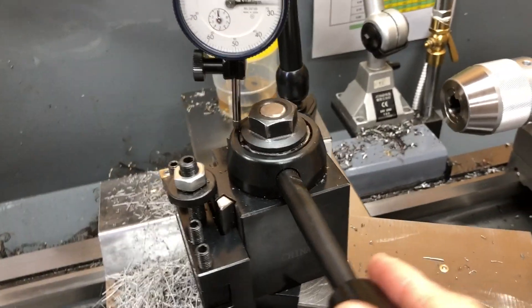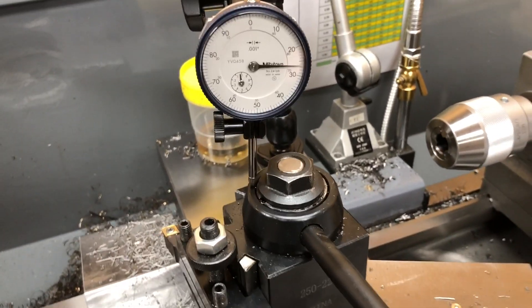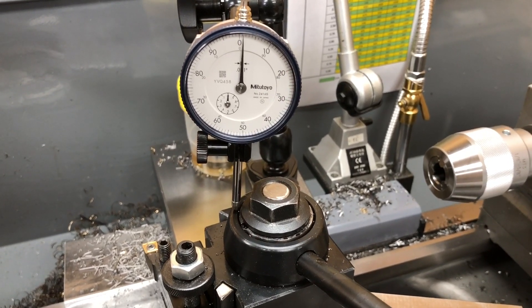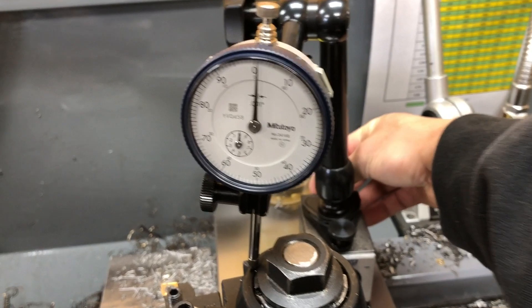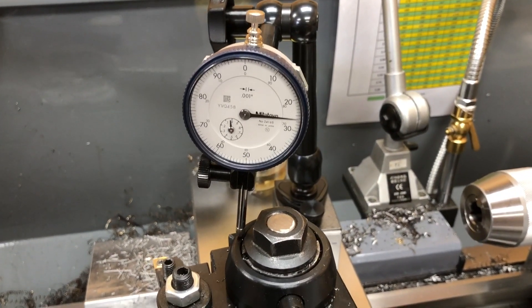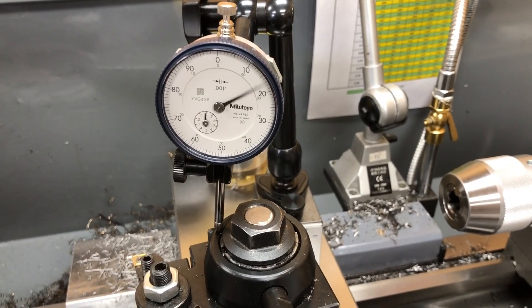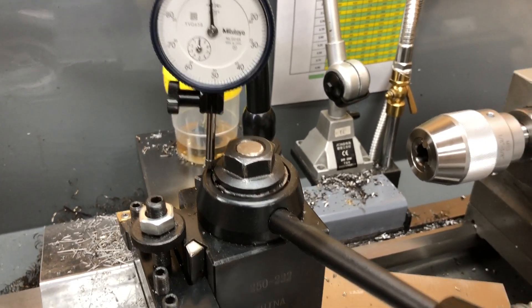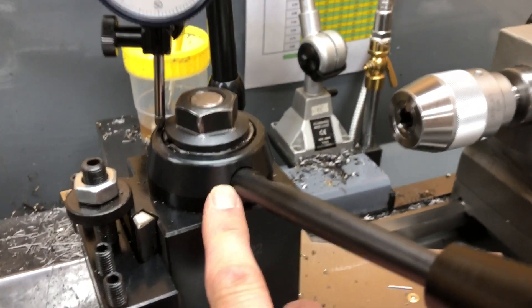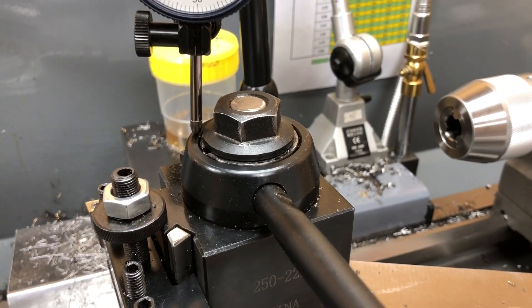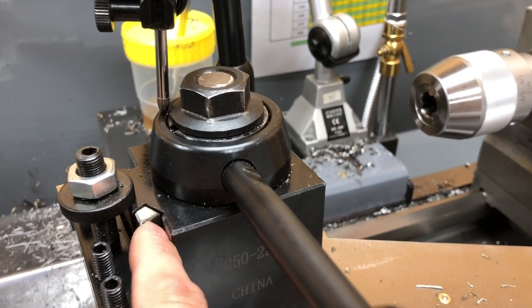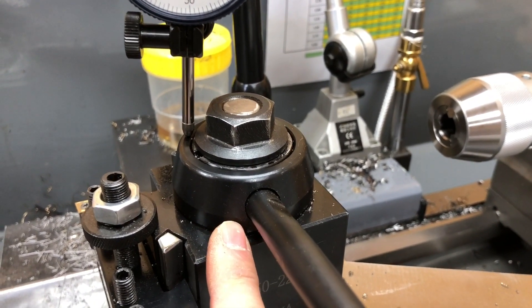So I quickly put a dial indicator on there for you and hopefully you can see it. Let me adjust the zero. The slop is about 27 thou, meaning this piece right here where the lever attaches to moves up and down that 27 thou before the scroll inside catches on to these wedges.